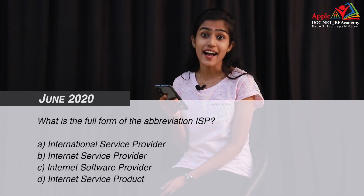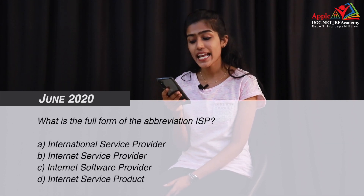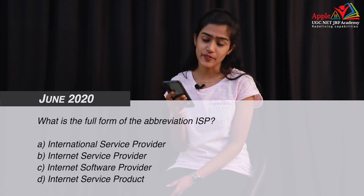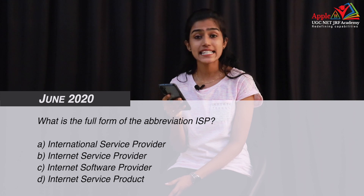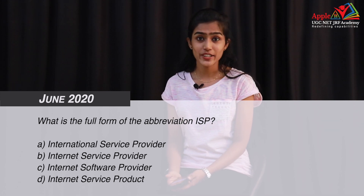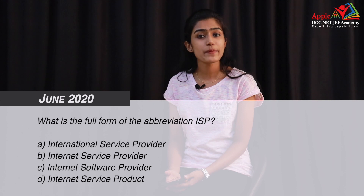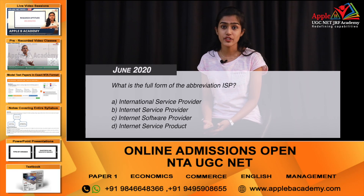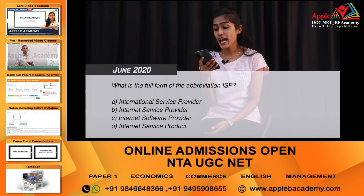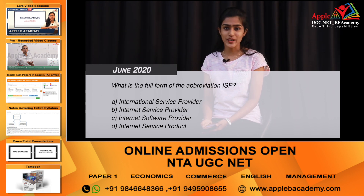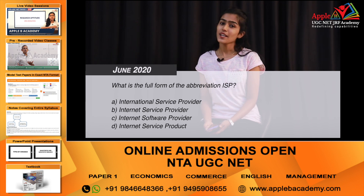So here you have a question: what is the full form of the abbreviation ISP? You have the options: A) International Service Provider, B) Internet Service Provider, C) Internet Software Provider, and D) Internet Service Product. Now you know the answer — we already discussed it. ISP stands for Internet Service Provider, and that is option B. So the right answer for this question is option B.